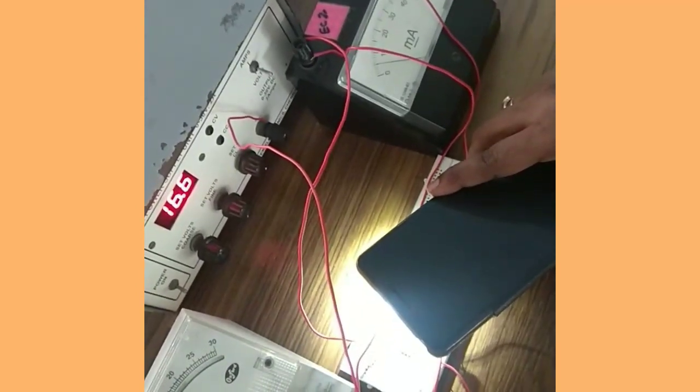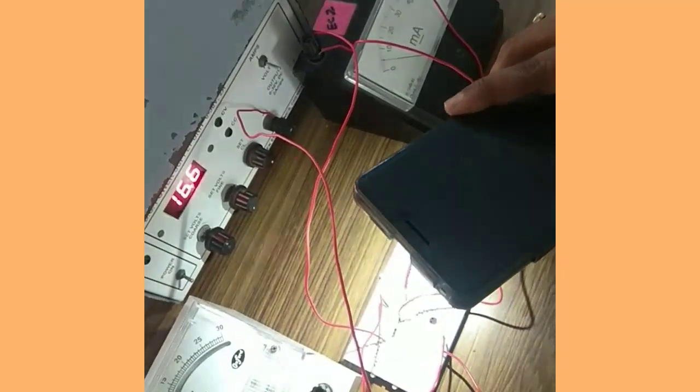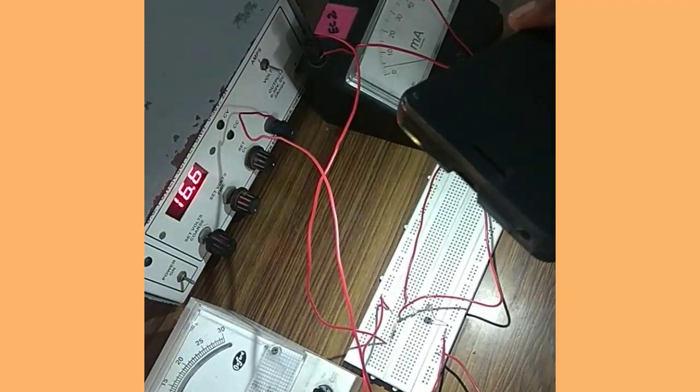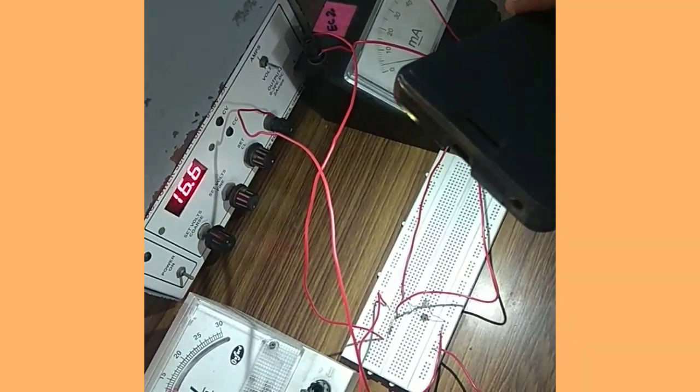Once again, at a closer distance you can see the current is high. When I increase the distance, you can see the current decreases, which means there is a variation in the resistance.